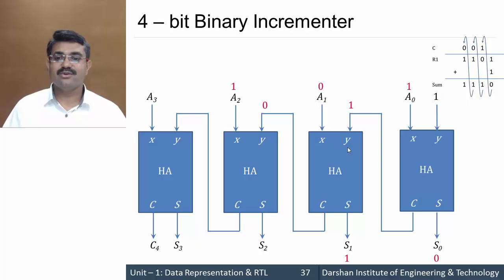Then A2 is 1, so 0 plus 1 gives sum 1, carry 0. Lastly, 0 plus 1 again gives sum 1, carry 0. This is how the operation is carried out.